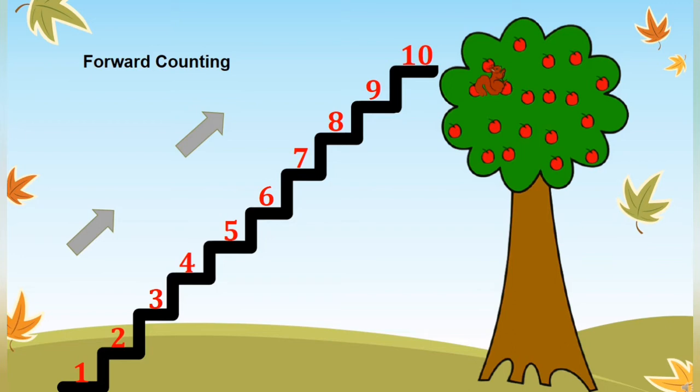Here, 2 is more than 1. 3 is 1 more than 2. 4 is 1 more than 3. Next number is 1 more than the previous number. So, 1 more, that is 5. Then 1 more, that is 6.